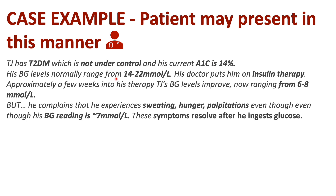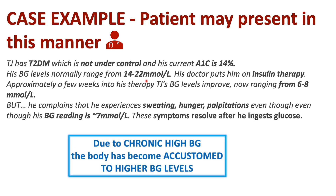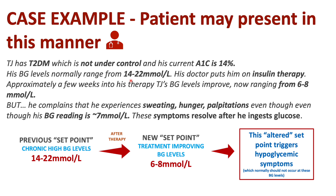Looking back at TJ's case — normally his blood glucose levels are 14 to 22 millimoles per liter. Having chronic high blood glucose levels over a prolonged period of time, the body has become accustomed to this higher level, so the set point has changed. For TJ, anything that drops below 14 millimoles per liter will trigger those hypoglycemic symptoms. So even though his insulin therapy has improved his blood glucose levels, this is triggering those hypoglycemic symptoms. And after he ingests glucose, his symptoms resolve.